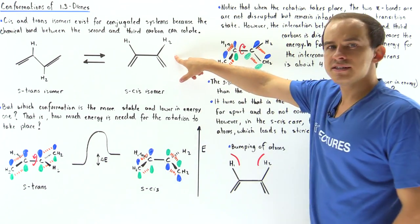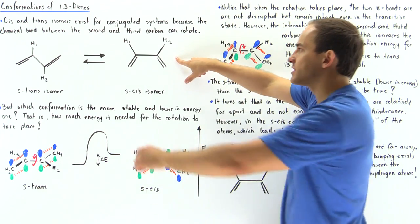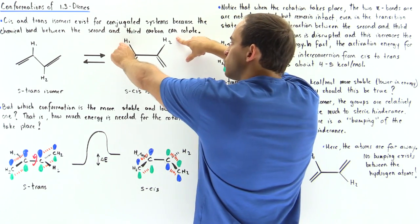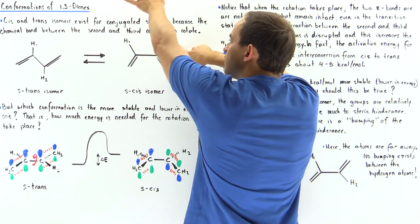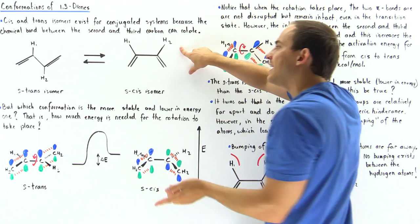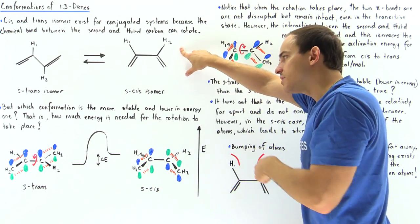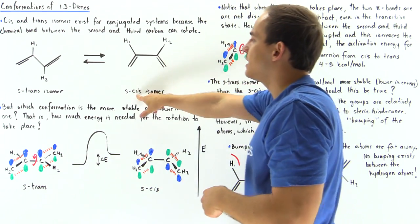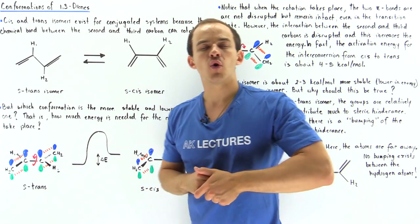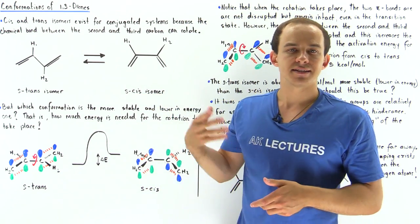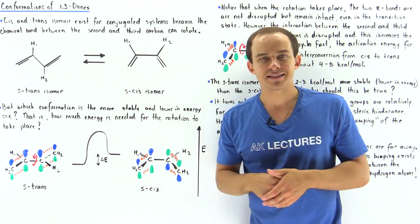In the S-cis isomer, notice that these two H atoms are found on the same plane and on the same side — that's exactly why we call it the S-cis isomer.